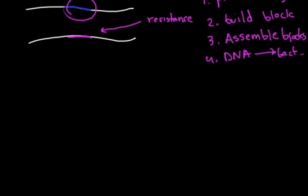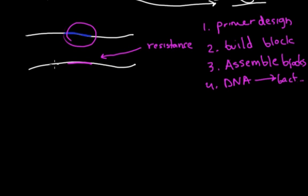Firstly, let's design the primers. To do this, we have to identify what our building blocks will be. Our building blocks will be roughly 400 base pairs upstream of the gene of interest, which we'll call up.